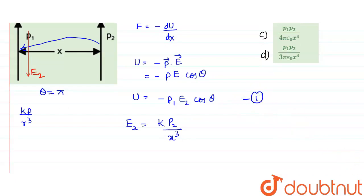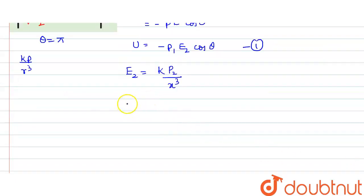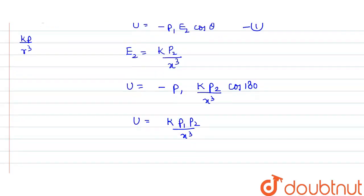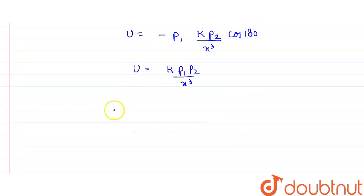Substituting all values into our equation: U = -p1 × (kp2/x³) × cos(180°). Since cos(180°) = -1, the two negatives multiply to give a positive, so U = kp1p2/x³.